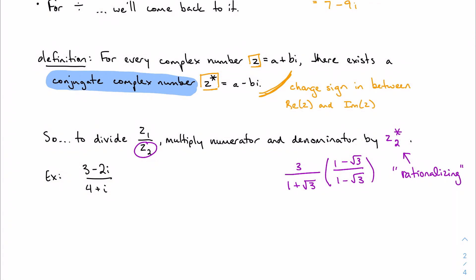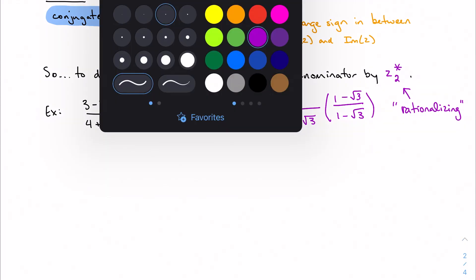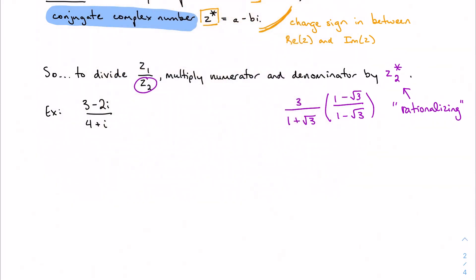To divide my example here, 3 minus 2i divided by 4 plus i, I'm just going to multiply both sides of my rational expression by the conjugate of the denominator, 4 minus i.